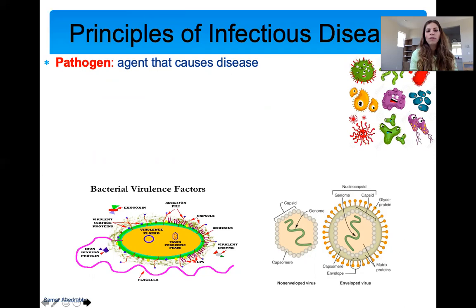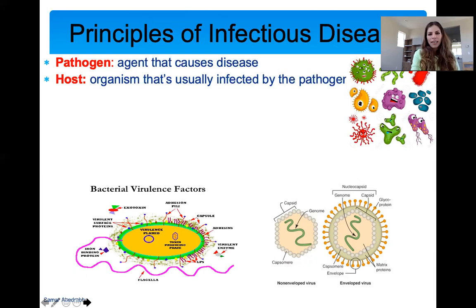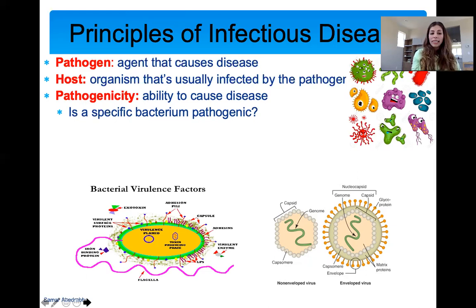A pathogen is something that causes disease. A host is the organism affected by the pathogen. Pathogenicity is the ability to cause disease — if I ask whether a specific bacterium is pathogenic, I'm asking whether it causes disease. We use these terms a lot as microbiologists.